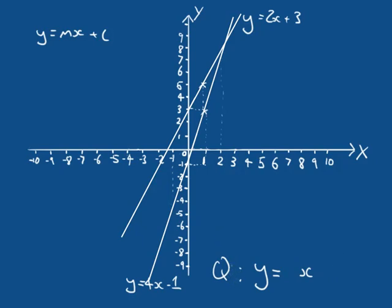Question three: draw the line Y equals a quarter X plus 1. Go ahead and pause, give this a go, and when we come back I'll work through it on the whiteboard.